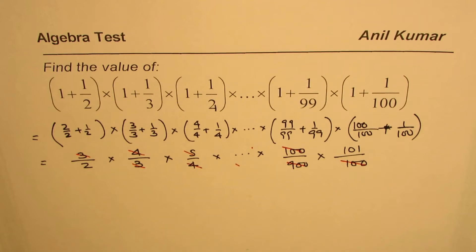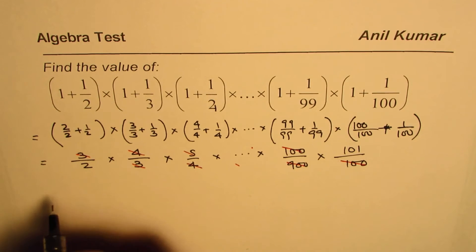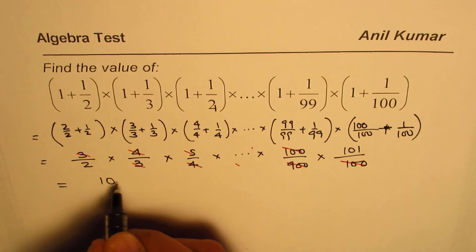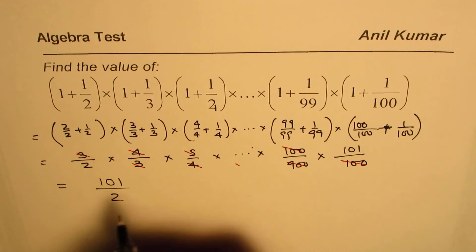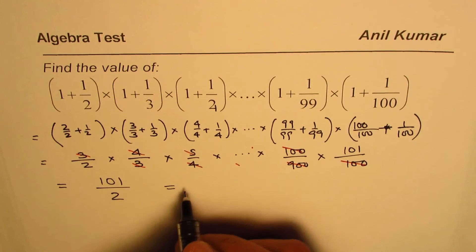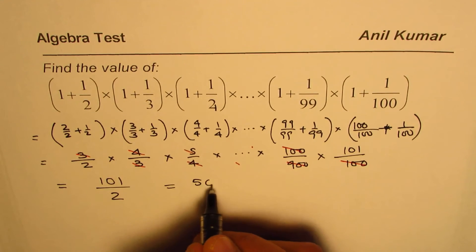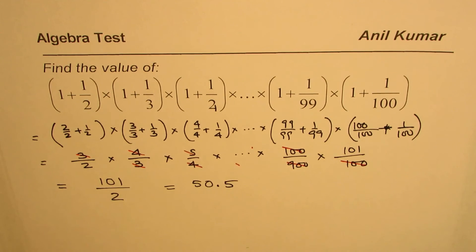So what you will get as your final result is one hundred and one over two, right? So this is in fact one hundred and one over two, which if you want, you can write in decimals as 50.5.